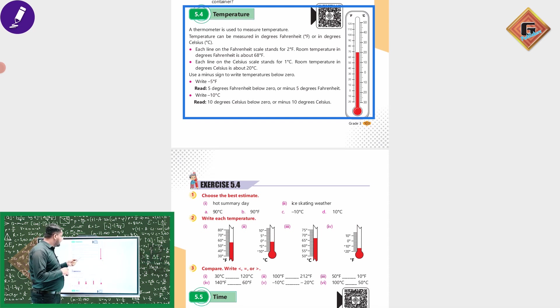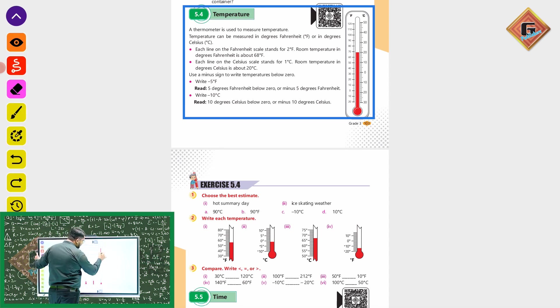Minus 5 degree centigrade - minus 5 degree centigrade means here we go to minus 5 degrees. Below zero, or minus 5 degree Fahrenheit, we can say this is 5 degrees Fahrenheit below zero.